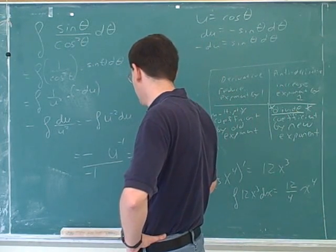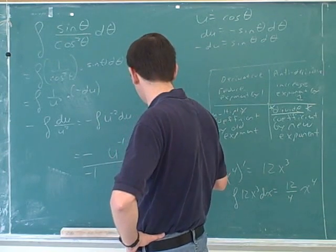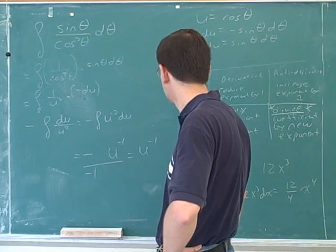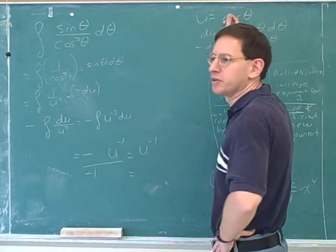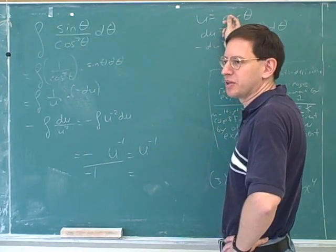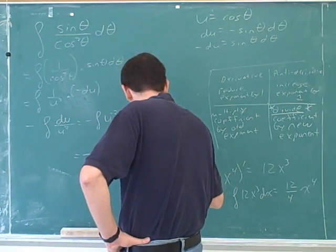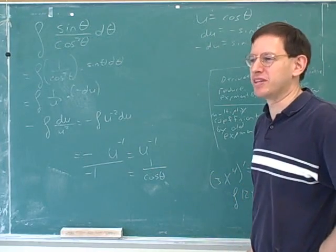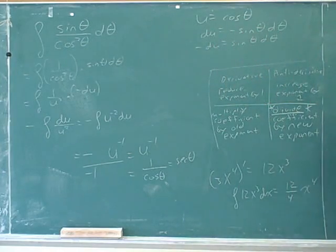We ended up here with u to the negative one as our anti-derivative. So what's our answer? 1 over cosine. Yeah, we still have to plug in what u is, because u is just a variable we invented. We can't just leave the u in our answer. This would also be secant theta. That's the answer we got before, right? Using the other method, we'd already seen that the anti-derivative here was the secant. So those are two ways to get to that answer.